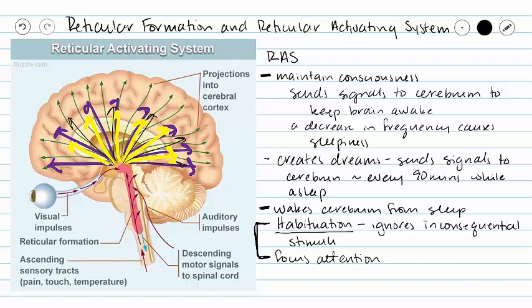Various drugs target the reticular activating system. Barbiturates and sleep medications target the RAS, as does alcohol, which can make you sleepy. Medications like Ritalin help focus attention. This wraps up our short series on the brainstem, but more videos on the brain are available — contact your instructor with any questions.